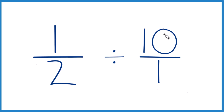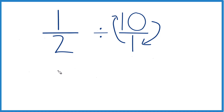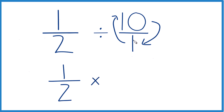Next, I'm going to take the reciprocal of 10 over 1. So I'm going to move the 10 to the bottom, the 1 to the top. That way, I can say 1 half, instead of division, times the reciprocal of 10 over 1, which we said is 1 over 10, or 1 tenth.